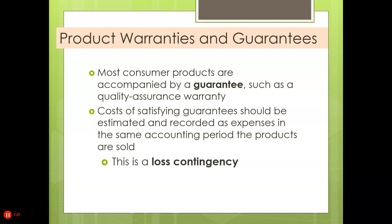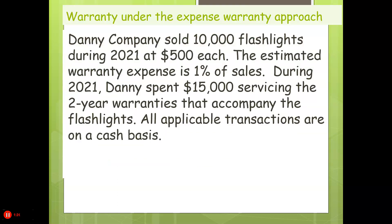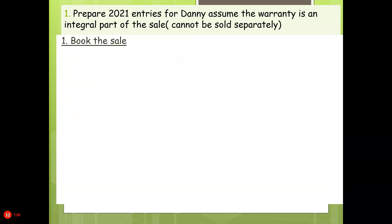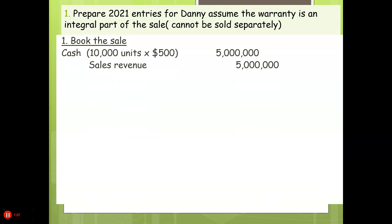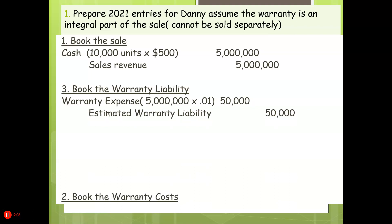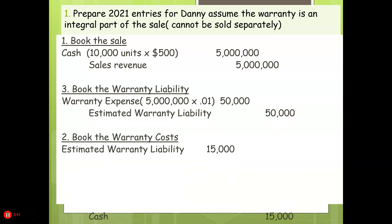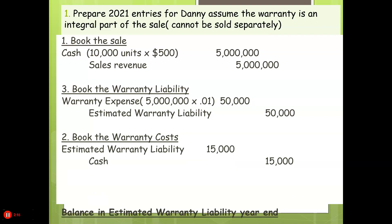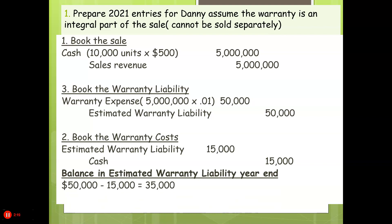Let's look at an example. Danny Company sold 10,000 flashlights during 2021 at $500 each — very expensive flashlights. The estimated warranty expense is 1% of sales. During 2021, Danny spent $15,000 servicing the two-year warranties that accompanied the flashlights. All applicable transactions are on a cash basis. We'd book the sale. And since we don't have cost of goods sold, we won't book that, but normally you would if this was perpetual. Book the warranty liability, which is 1% of sales. Book the warranty costs and take them against the warranty liability account. The balance in the account would be $35,000 at the end of the year.